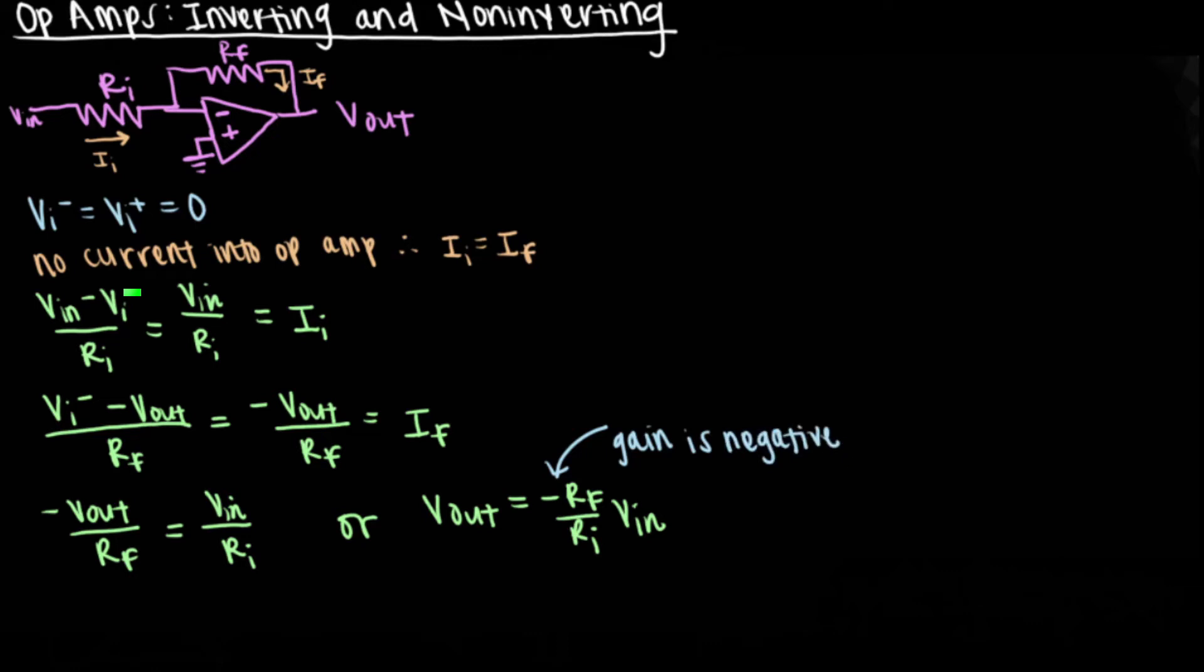Setting these equations equal to each other and multiplying both sides by negative RF, we can get Vout equals negative RF divided by RI times VN. As you can see, the negative RF divided by RI value is the gain and is thus inverting.